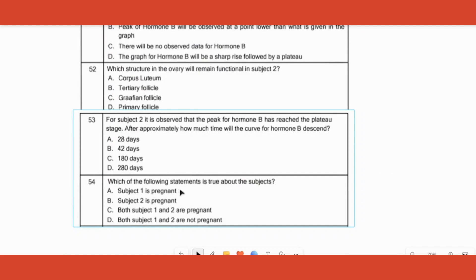Its structure in ovary will remain functional in subject two. In subject two, remember that this person is the pregnant lady with the progesterone going up. So when she is pregnant, which structure will go on producing the progesterone hormone? That is corpus luteum.